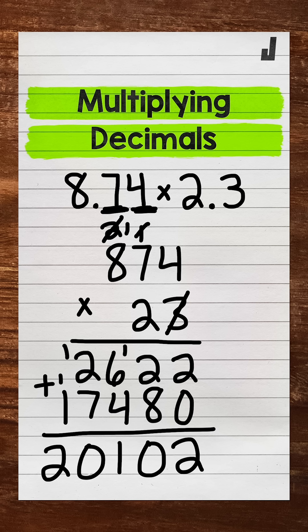1, 2, 3. That means our answer needs 3 decimal digits. 3 digits to the right of the decimal.